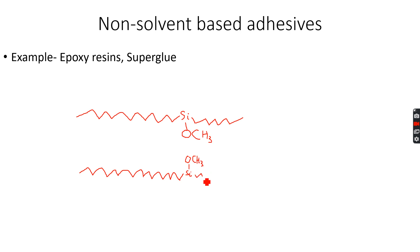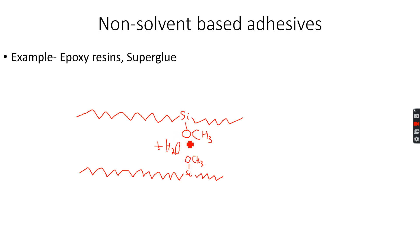The polymer chain of the adhesive continues. What happens is that in the presence of moisture — and moisture is always in the atmosphere — these two polymer chains form bonds with each other.